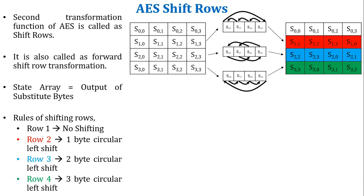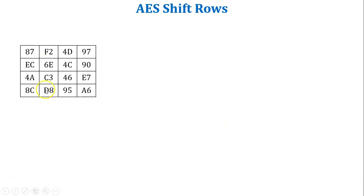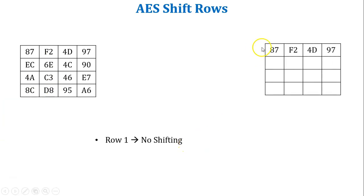Now let's take an example to understand AES shift rows. This is the state array, which is the output of substitute bytes. Let's perform AES shift rows on this state array. As per the rules, row 1 has no shift, so row 1 remains as it is.